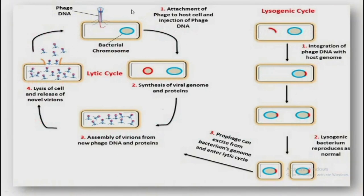This diagram explains the lytic and lysogenic cycles. In the lytic cycle: first, the bacteriophage uses its tail fiber to land on the cell wall of the bacteria — that is called landing. Then the tail fiber tightly holds the cell wall — called pinning. These two processes take place in adsorption. Then in the penetration stage, the nucleic acid of the phage enters into the host cell.